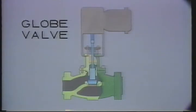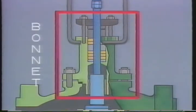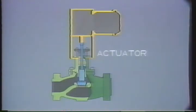Globe valves get their name from the globular shape of their bodies. This valve connects to the process piping and serves as the main casing for the internal parts of the device. This valve has a bonnet connected to the valve body. The bonnet contains the stem seal or packing assembly. In between the body and bonnet, there's usually a gasket to seal the connection between the two parts. The actuator responds to the signals from the controller to initiate movement of the parts inside the valve.